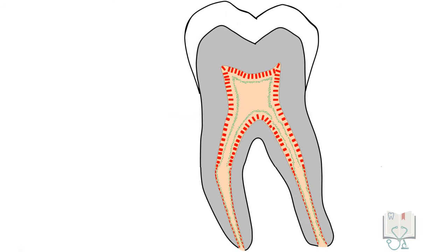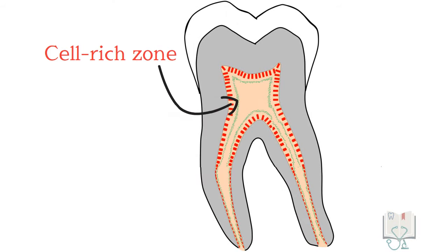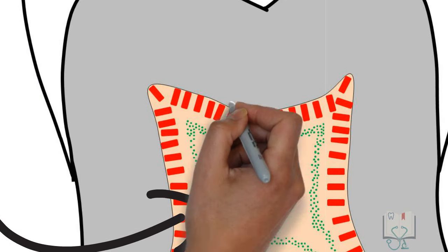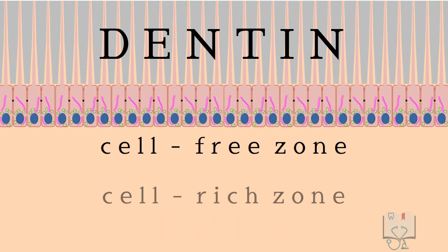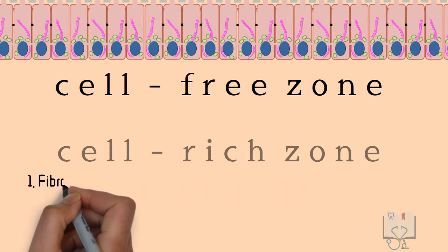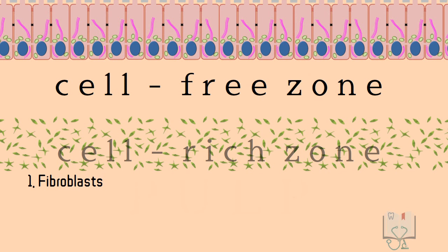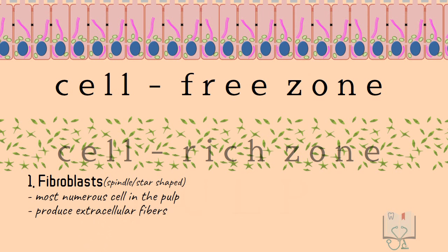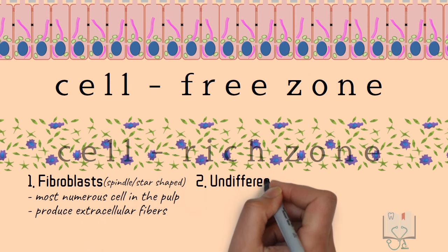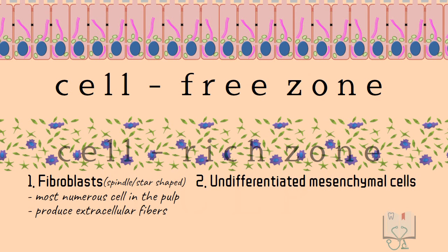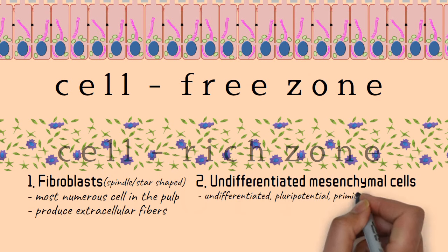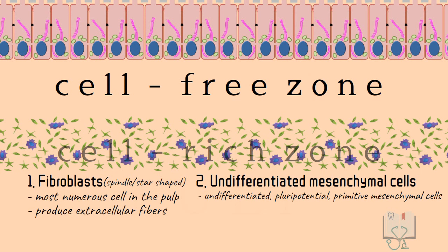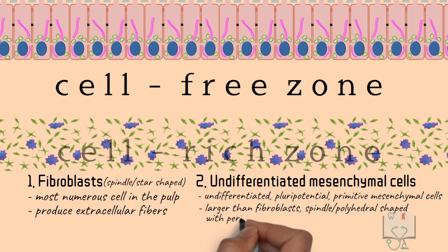The cell-rich zone is the zone next to the cell-free zone and has a high density of cells. There are mainly two cell populations: first, fibroblasts — the ubiquitous cells of unmineralized connective tissue — which may be spindle-shaped or star-shaped, are the most numerous cells in the pulp, and function to produce extracellular fibers. Second, undifferentiated mesenchymal cells — a population of undifferentiated pluripotential primitive mesenchymal cells capable of differentiating into a variety of cells. They are larger than fibroblasts and are spindle or polyhedral in shape.